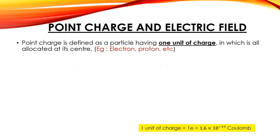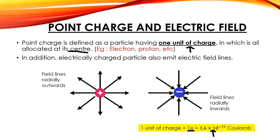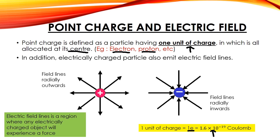Let's start with the definition of a point charge. A point charge is defined as a particle — any particle — having only one unit of charge, with all its charge located at the center. One unit of charge is written as one E, and one E has a magnitude of 1.6×10⁻¹⁹ Coulombs. Coulomb is the unit used to represent charge. In nature, this one unit is the smallest unit possible — it cannot be split any smaller, so it is quantized.